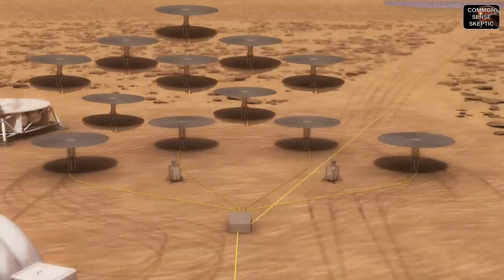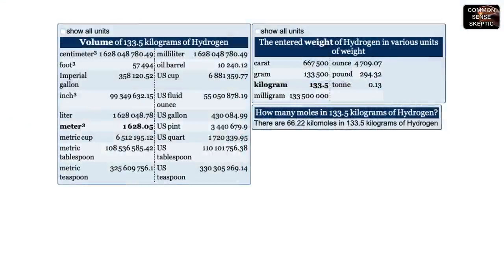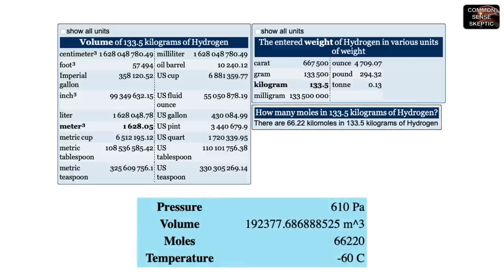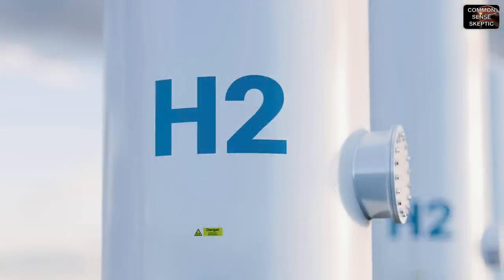Alternatively that's 12 nuclear reactors if running a 12-hour duty cycle. At the end of the daily processing cycle they would have collected 133.5 kilograms of hydrogen gas. Going back to the AquaCalc website, 133.5 kilograms of hydrogen gas contains 66.22 kilomoles of hydrogen, and on chemicool.com that says at 610 pascals and minus 60 degrees Celsius the uncompressed gas takes up a volume of 192,378 cubic meters — or 77 Olympic-sized swimming pools. Then that gas needs to be kept in pressurized storage until it's ready to enter the Sabatier reaction chamber.